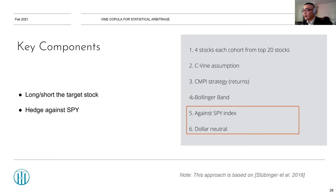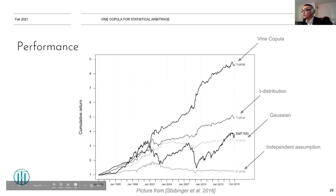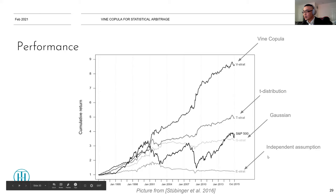They trade against the SPY index and make the portfolio dollar neutral — trading against the S&P 500 index is cheaper than longing and shorting individual stocks, and other authors have used this method as well. Looking at the performance: the V-strat (vine copula) on data from 1992 to 2015 just blows through the roof — very promising results. The T-strat and G-strat use multivariate t and Gaussian distributions respectively, while the benchmark assumes all stocks are independent and makes no money.